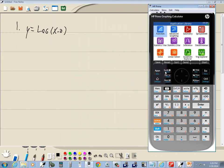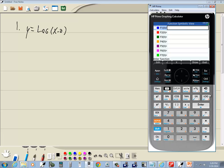If you're not back at your apps, go ahead and press your apps button. And you want to highlight function, press enter. And we have a log button. This log button here is base 10. So we just press log and it puts the beginning parentheses and closing parentheses. And then we just have to put our x minus 2 inside of it. And then press enter.